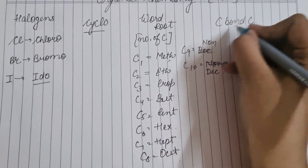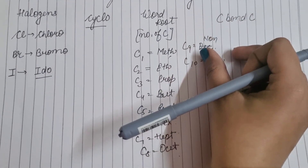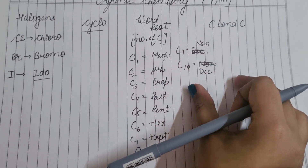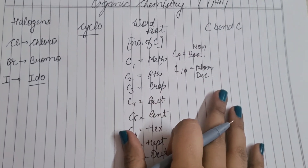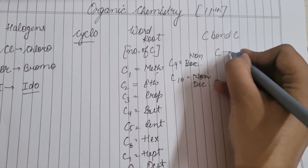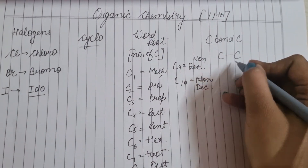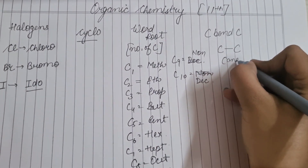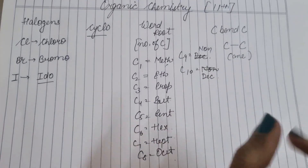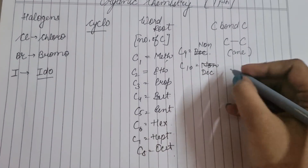दो carbon के बीच में क्या bond है, वो भी check करना जरूरी है। तो अगर carbon-carbon के बीच में single bond होता है, तो हम उसके पीछे 'ane' लगाना है। यह मत भूलना।